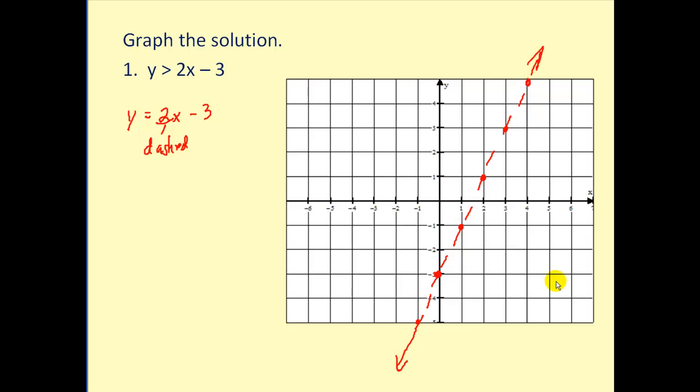Now we either have to shade above or below the line. Because it says greater than and it's solved for y, we are going to shade above or to the left. But let's just pick a test point to make sure. We'll pick the test point (0, 0).